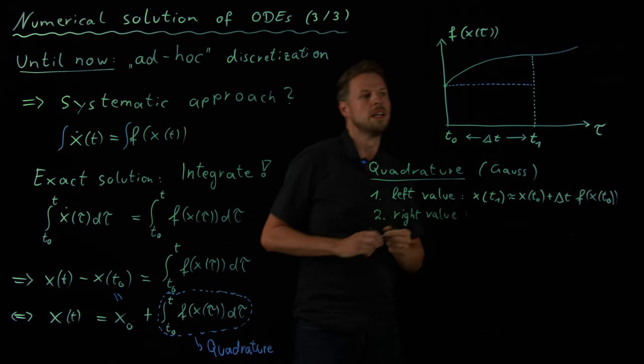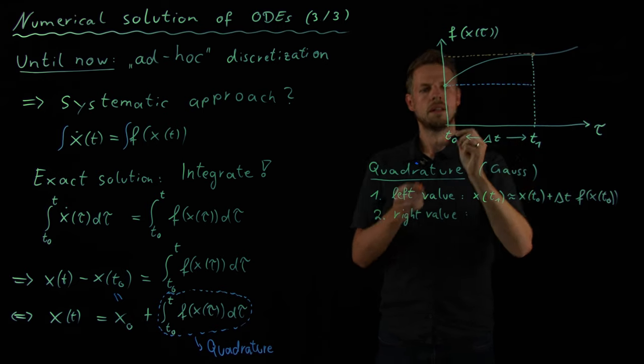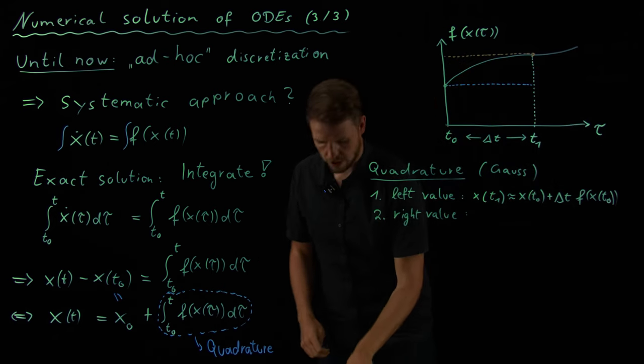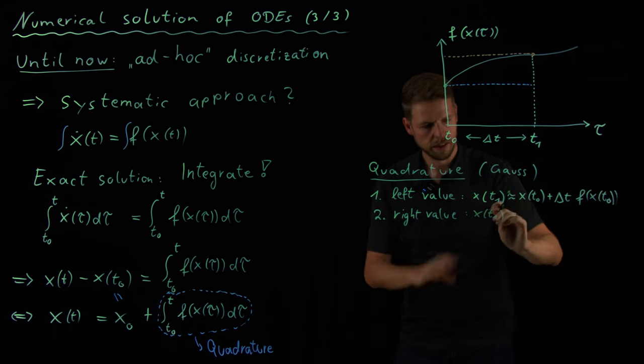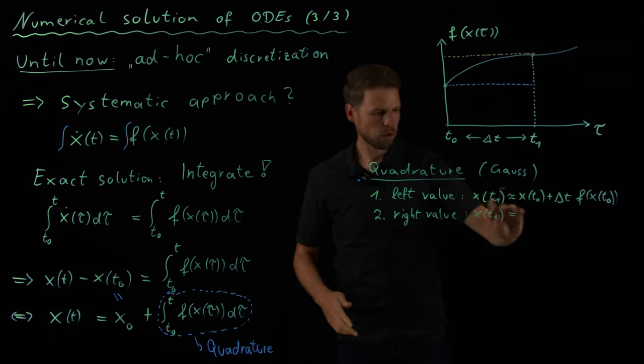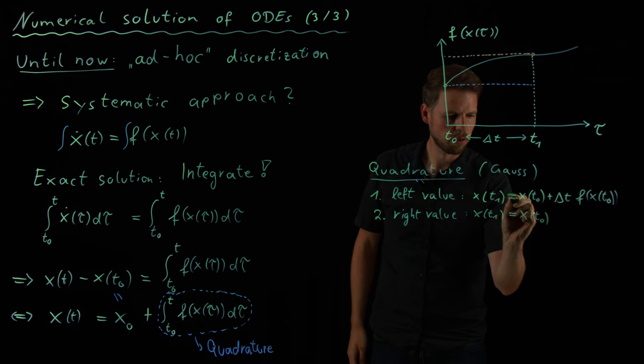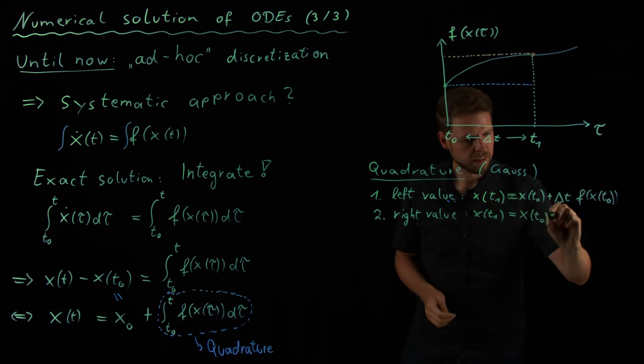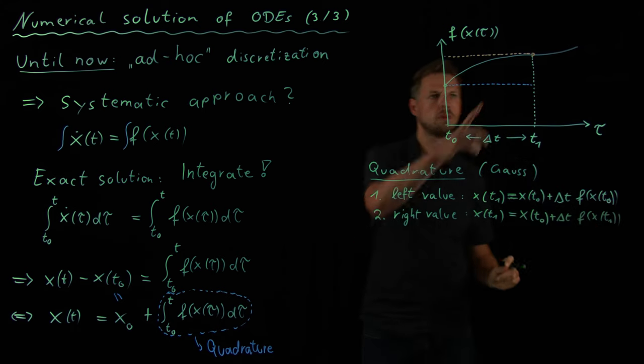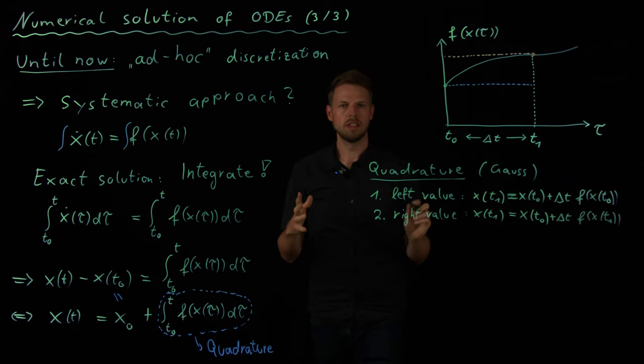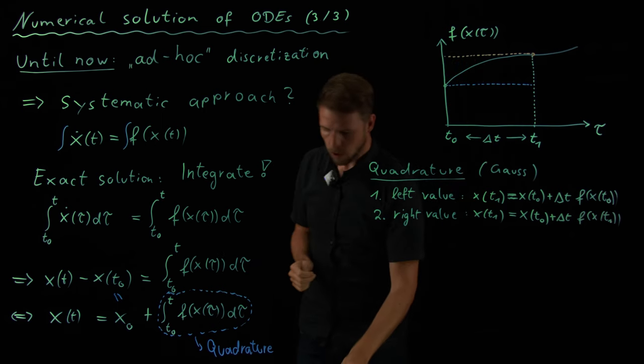But now you see, well, we're not limited to the left value. We can also take the right value. So, now, let's switch to another color. If I do this, then this is precisely this point. And the integral is approximated by this area. And surprise, surprise, this will be the implicit Euler. x of T1 is given by, or it's an approximation, obviously, but if we take this rule, then what we get is x of T0, now let's be consistent here, plus delta T times f of x of T1. So, right-hand side, the integral becomes this area. And so, you see, implicit and explicit Euler are just two ways of solving this integral.